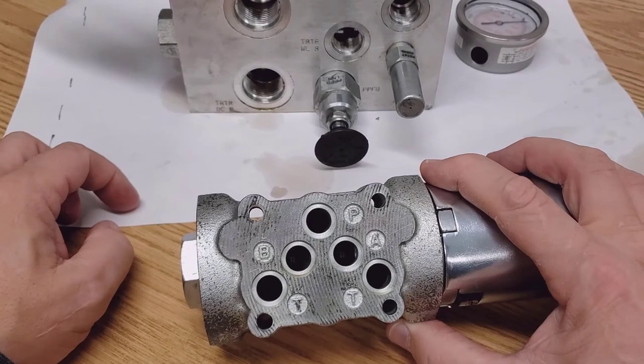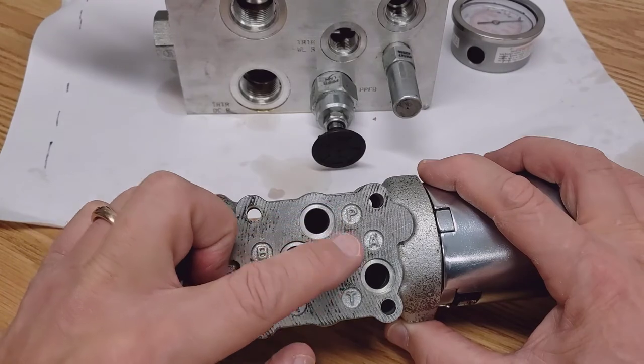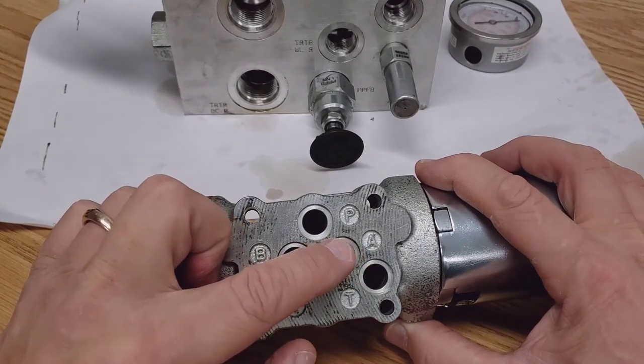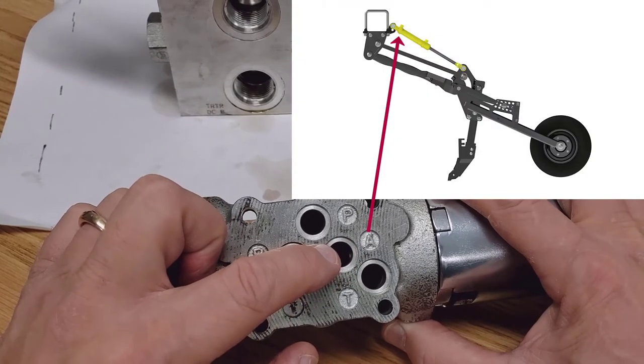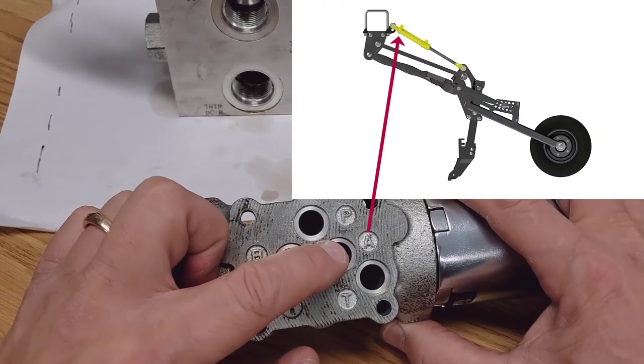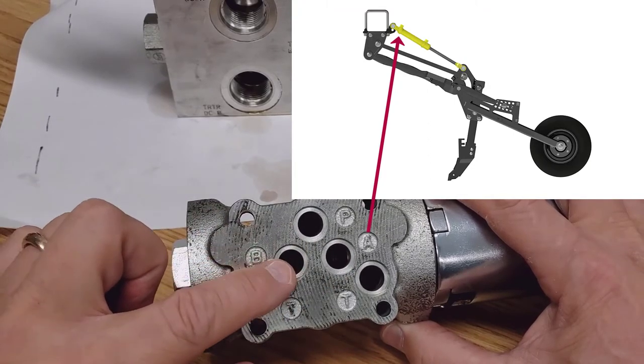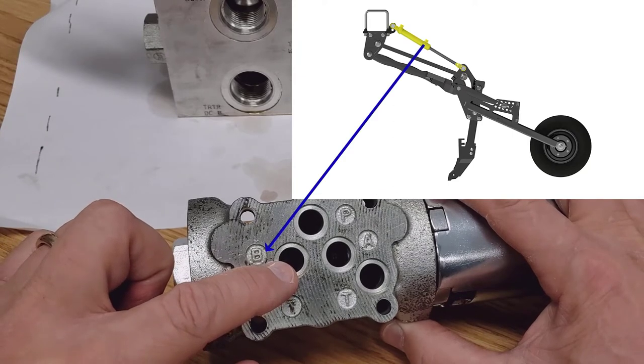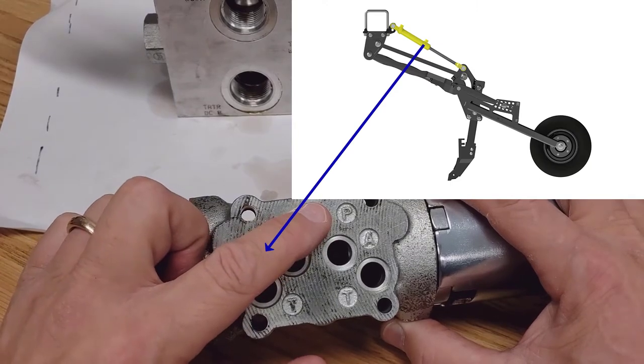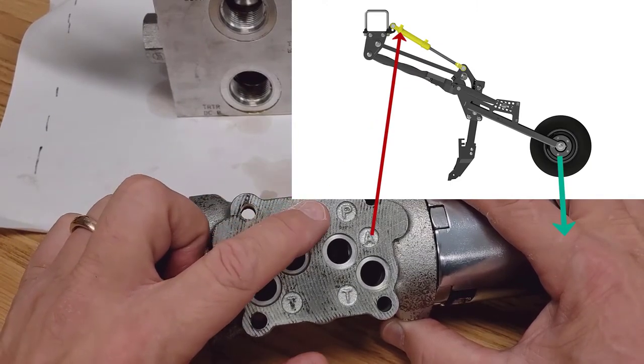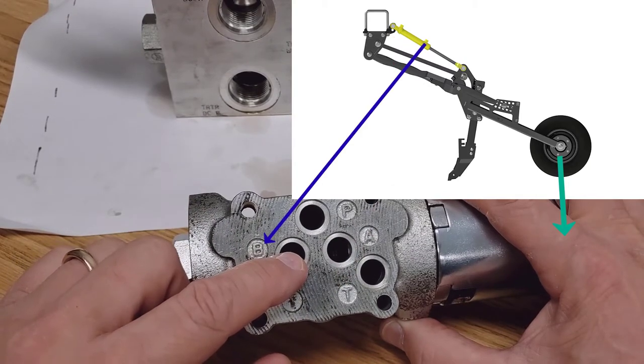In the lowering position, so the seeding position, P is connected to A. A supplies hydraulic force to the base end of the opener cylinders to engage them in the ground. The B port is connected to the rod end of those cylinders. So when we're going down, P sends oil over to A and the return path is through B.